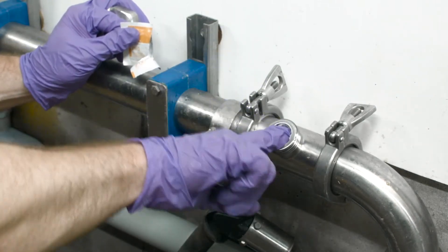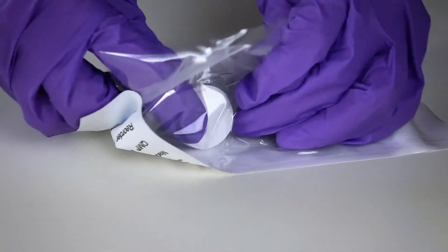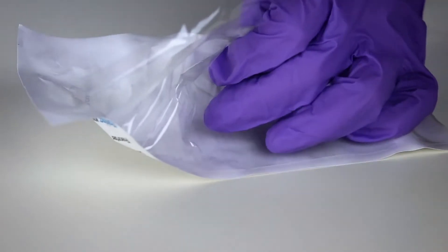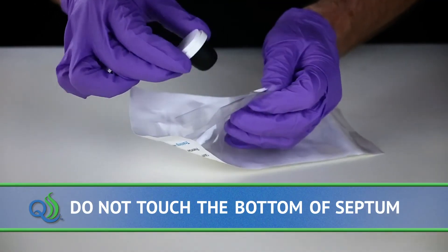Next, remove the appropriate QualiTrue sterile septum from the package by peeling the clear cover away from the white backing or by cutting the plastic package. Be sure not to touch the bottom portion of the septum.